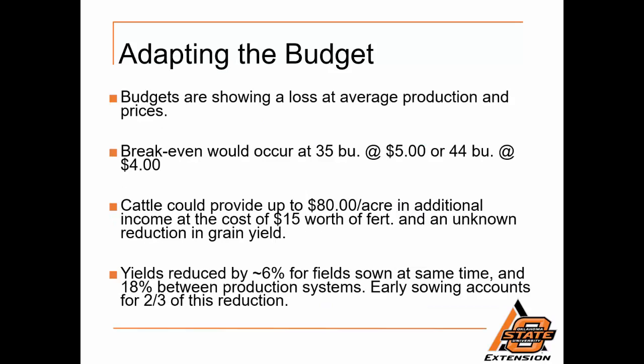We can adapt the budget as we look at how we're going to decide what crop insurance to purchase. Our budgets are showing a loss at average production and prices, but even though we're showing a loss it doesn't mean that crop insurance is not important. Our break-even would occur at 35 bushels if prices went to $5, or 44 bushels if prices stayed at expected $4. If we are a cattle producer, we could graze our wheat and try to provide up to an additional $80 an acre in income, but that would cost an additional $15 worth of fertilizer and perhaps an unknown reduction in grain yield. Research shows yields will be reduced by 6% for fields sown at the same time if they are grazed, and 18% if fields are sowed early in order to achieve a large amount of forage for grazing. Early sowing accounts for two-thirds of the reduction in grain yield.